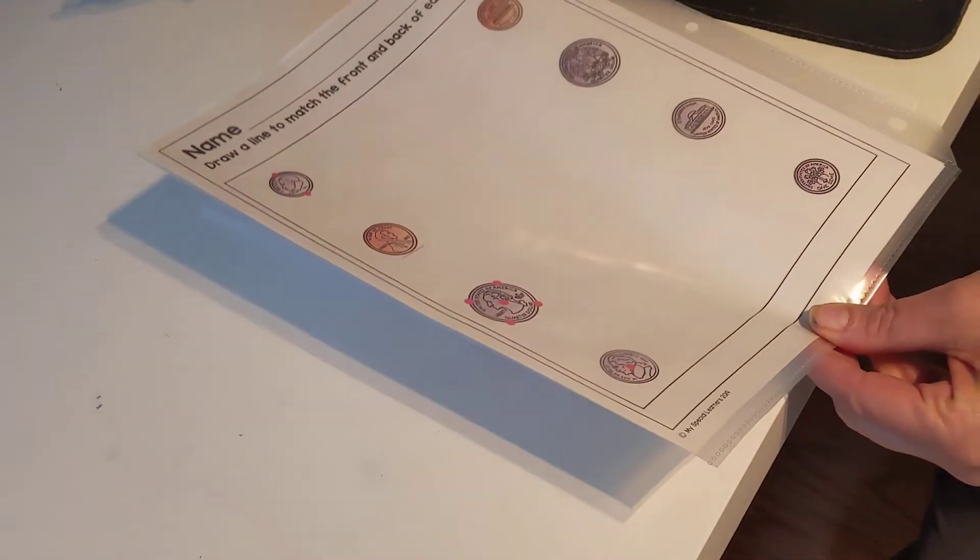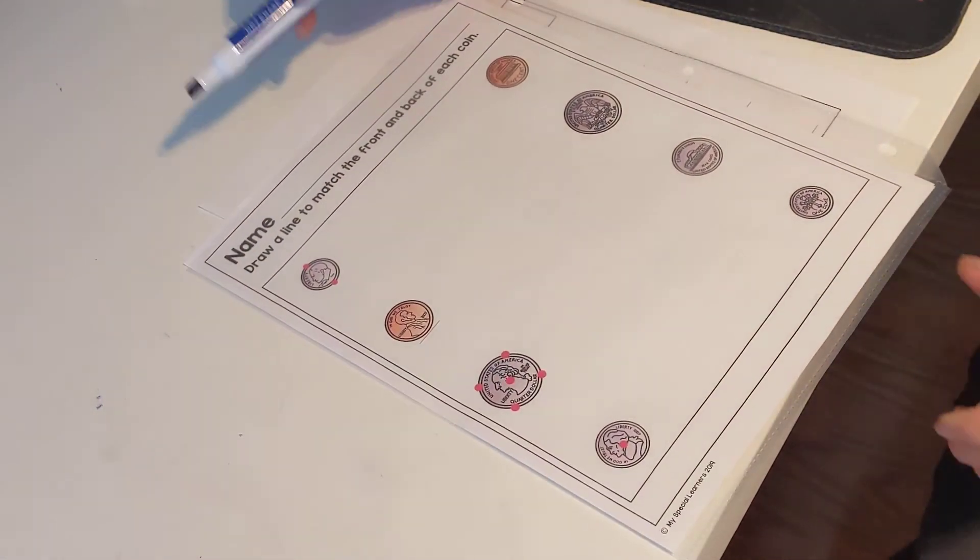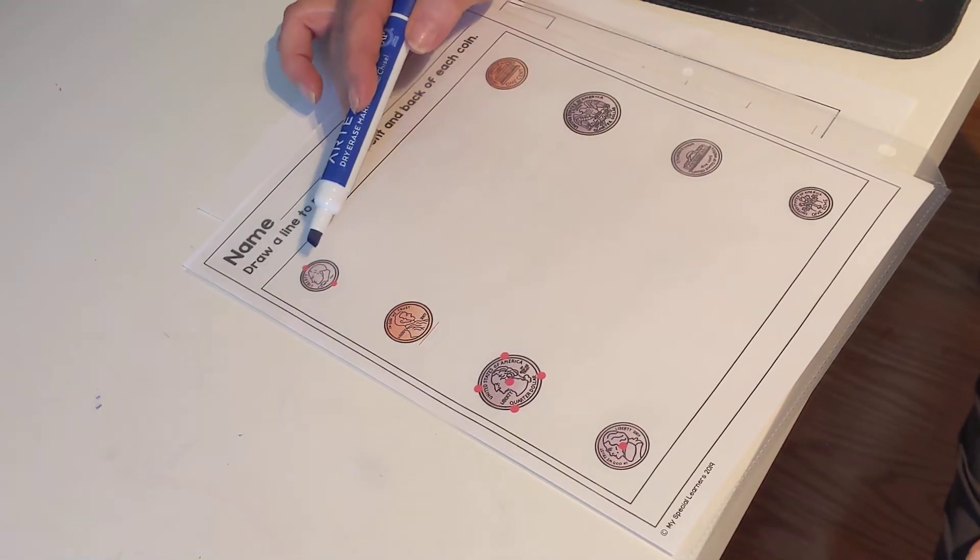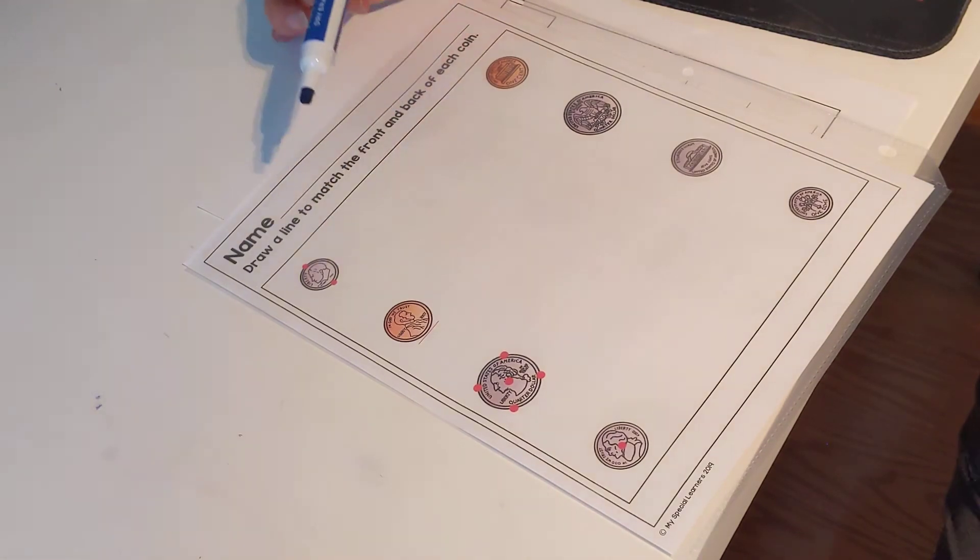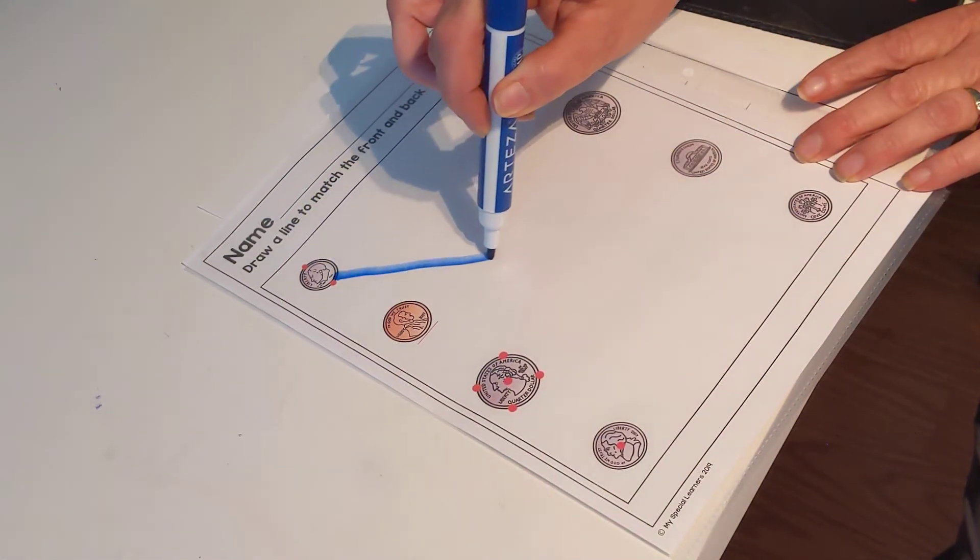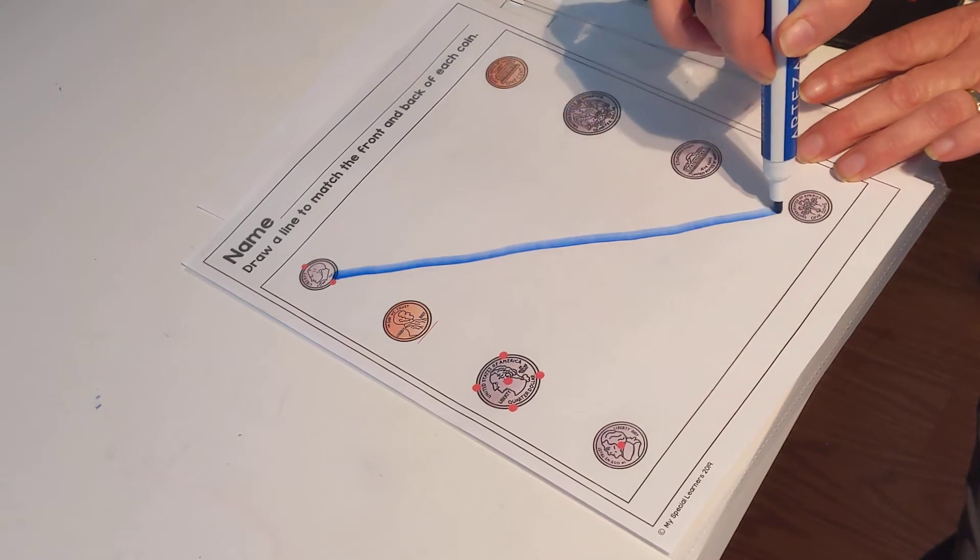And on the back? What coin are we starting with? We're starting with the dime. The front of the dime. Five, ten. The dime is worth ten cents. Let's find the back of the dime. Here we go.